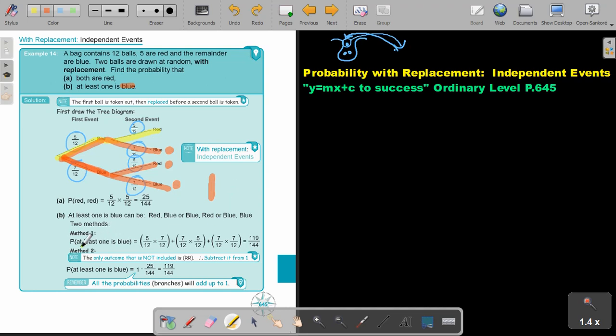You can either, method one, take all the red branches. Remember, what do we do in the branches? We multiply. So it's five over twelve multiply seven over twelve, seven over twelve multiply five over twelve. Or the last one, seven over twelve multiply seven over twelve. That will be my answer. That is the one way. Just work out the individual branches, multiply in them, and then add it up.